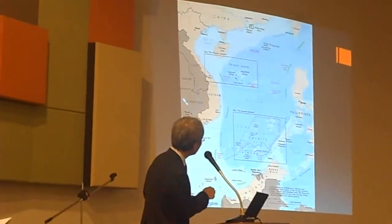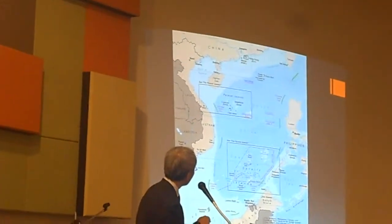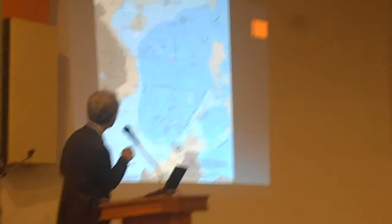China is now changing the 9-dash line, or the U-chain line, to assert it as China's territorial sea. However, China's position on this sea is not entirely clear. China claims sovereign rights over the sea within this line.